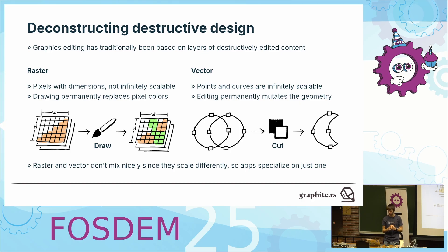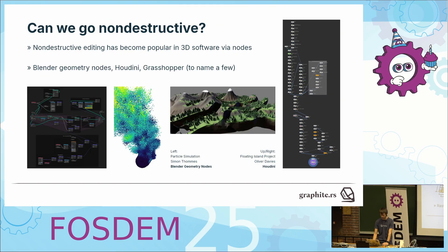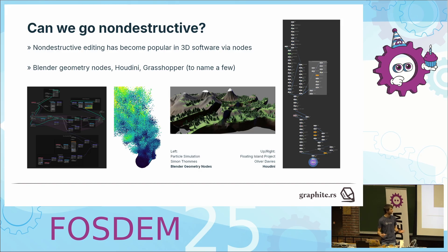In Graphite, we want to make this non-destructive. Non-destructive editing is used in industry, but mostly in 3D applications. Software like Houdini or Blender uses non-destructive editing to allow you to generate scenes and content, and they do this through a node-based approach.